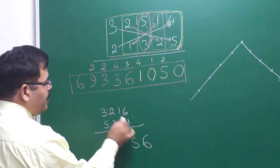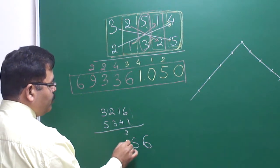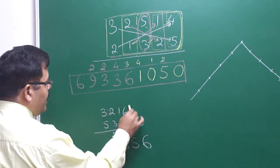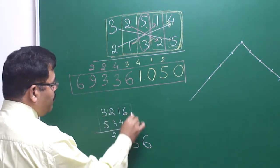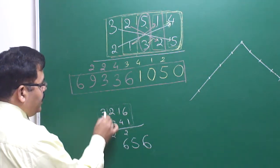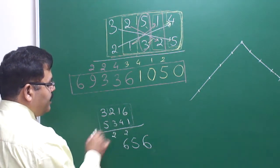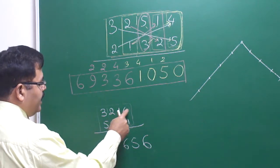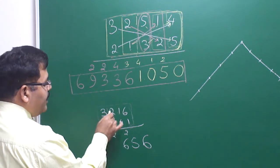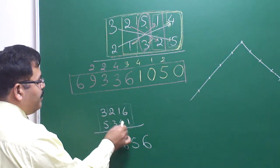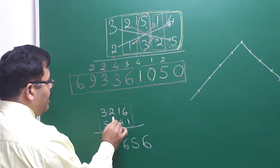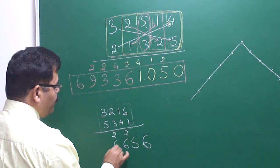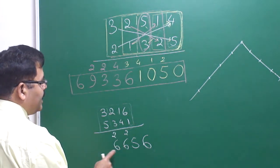Taking three at a time: 2 + 18 = 20, plus 4 = 24, plus 2 carry = 26, write 6, carry 2. Taking four at a time: 3 × 1 + cross products = 30, plus 3 = 33, plus 8 = 41, plus 3 = 44, plus 2 carry = 46, write 6, carry 4.